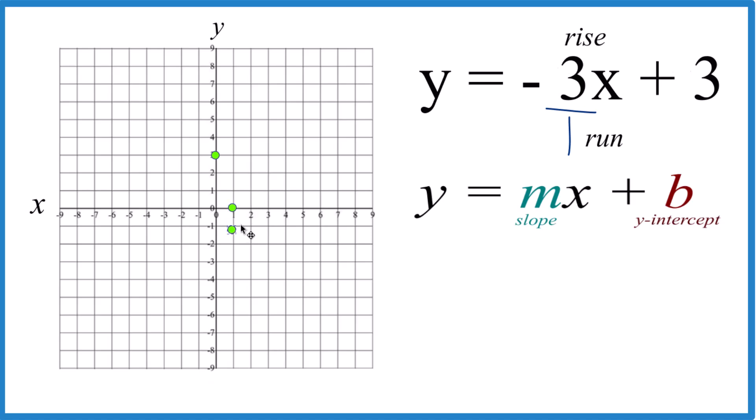From there, we do it again. Down 1, 2, 3, we run 1, and we can keep going.